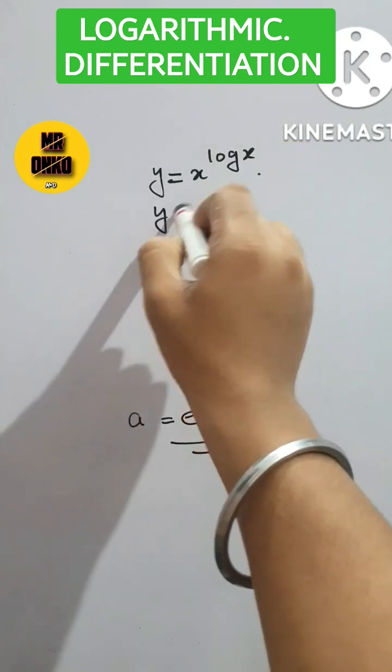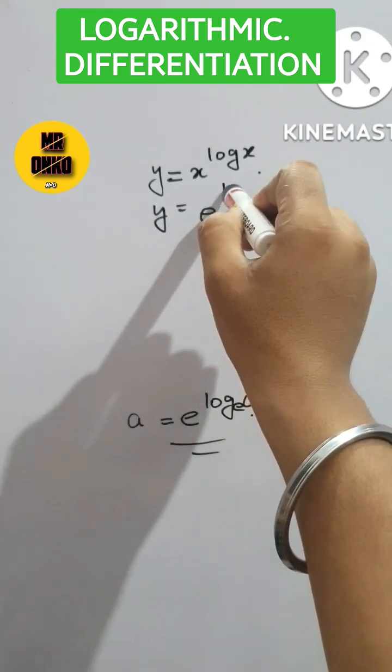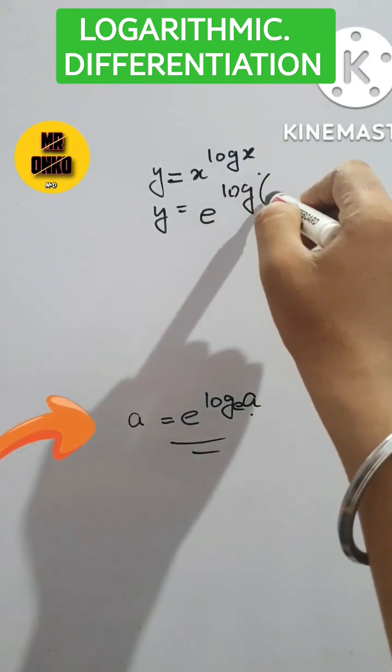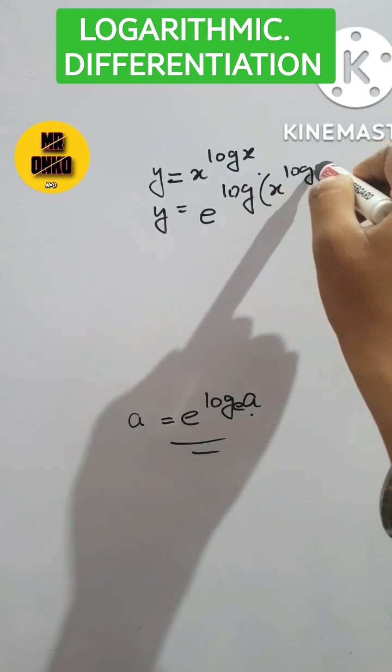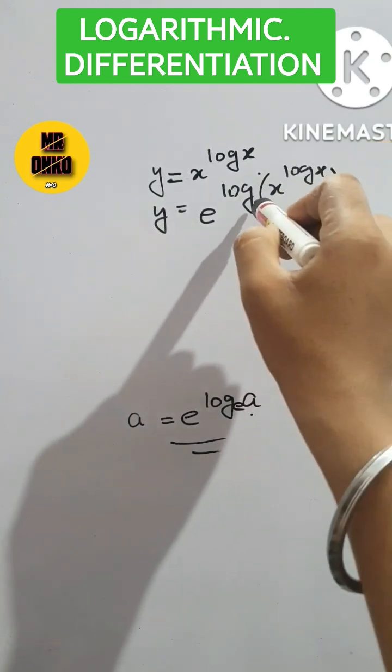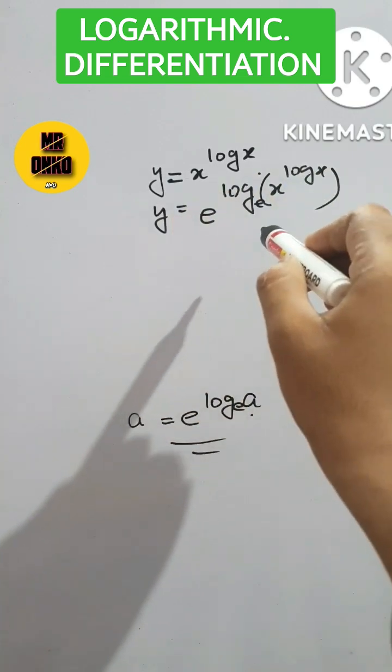We will convert this into e to the power log of x to the power log x. This will be the argument to the base e. This will be the exponential form.